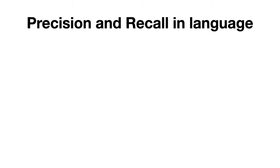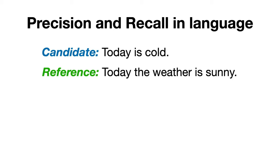For example, let's imagine that we have the following candidate sentence that was generated by a machine learning model, 'today is cold,' and the following reference sentence, 'today the weather is sunny.' How would you measure the precision and recall between the two? In this case, if we consider individual words as our units of measurement, we can see that both 'today' and 'is' are correctly predicted, but 'cold' is not present in the reference sentence.